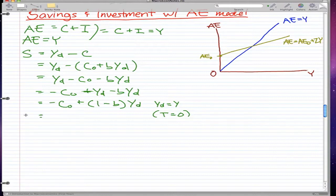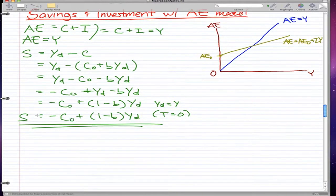And so savings S is equal to minus C naught plus 1 minus BYD. And this is one part of the video.